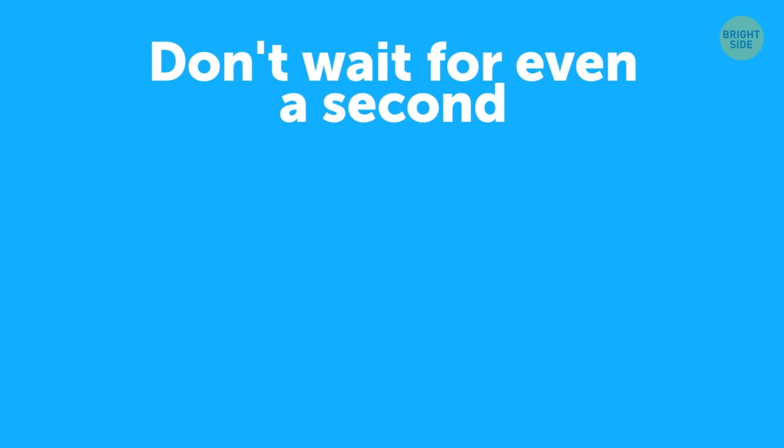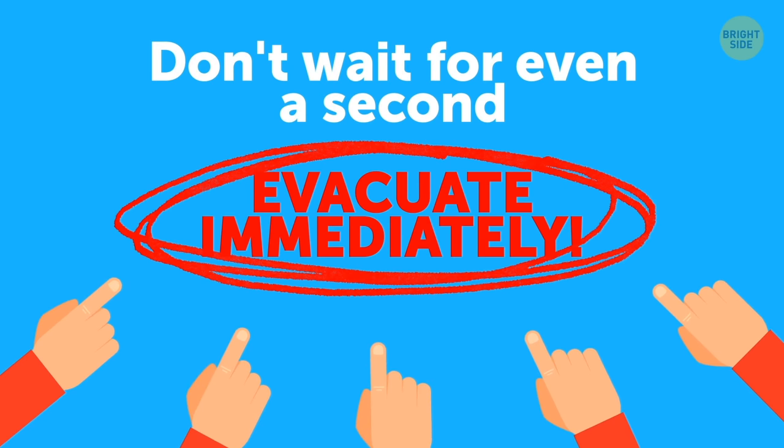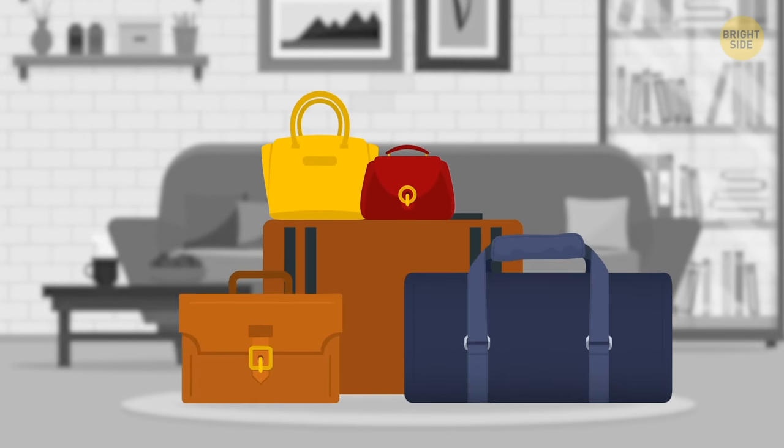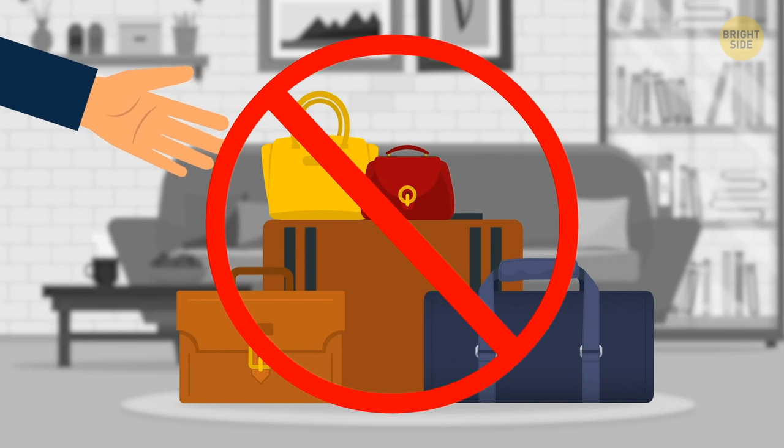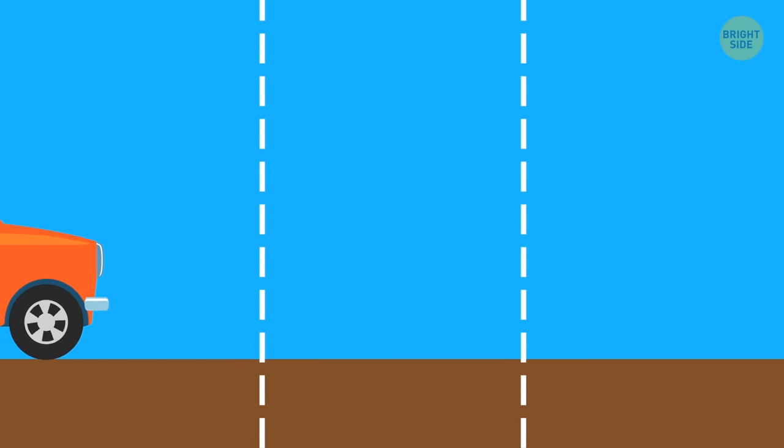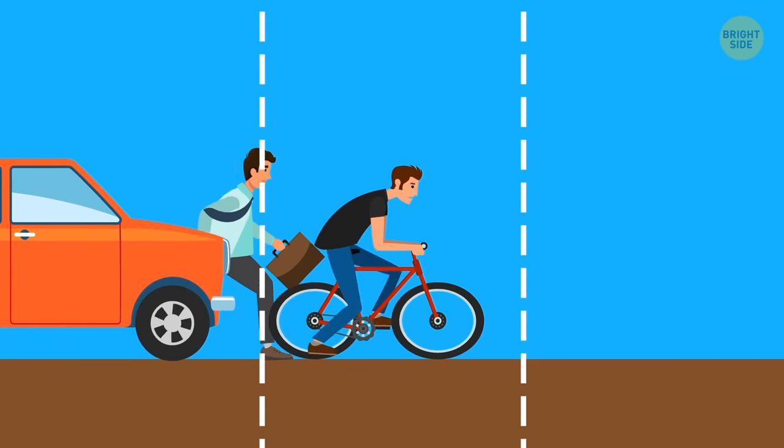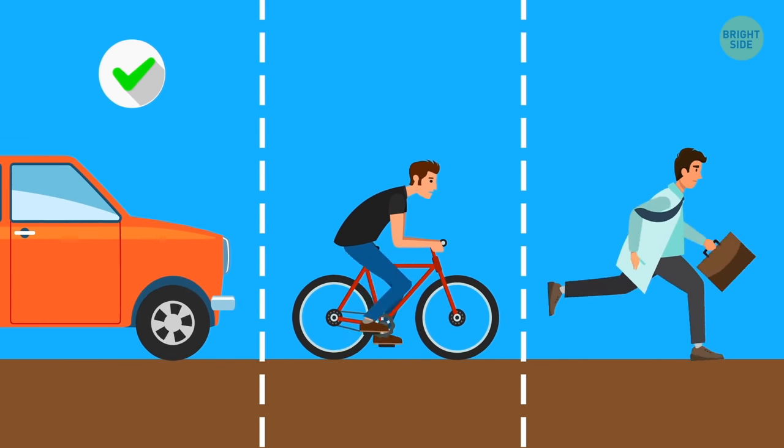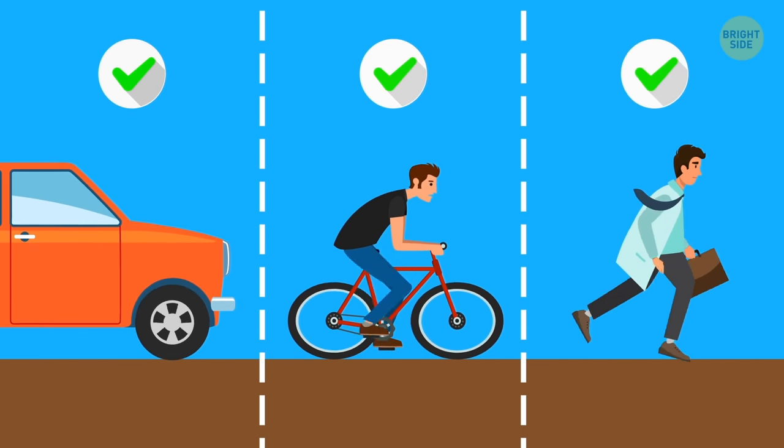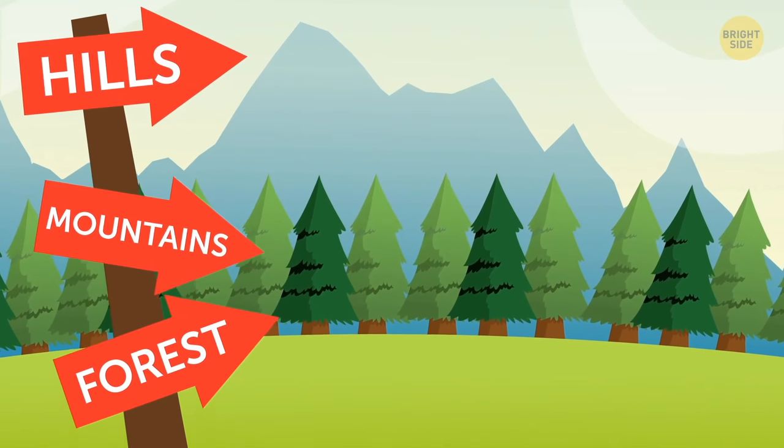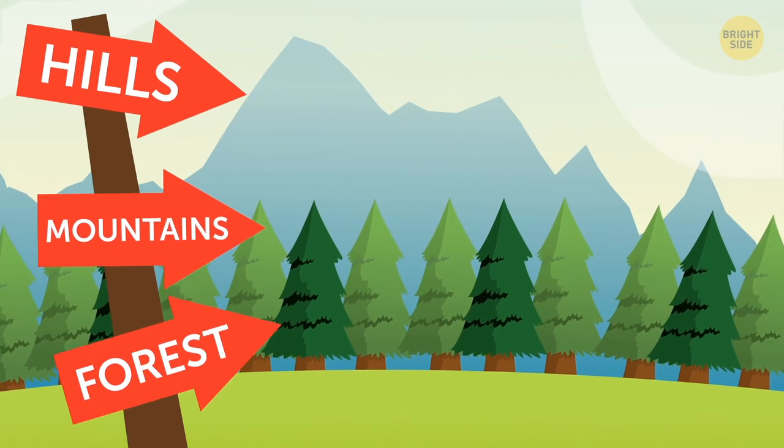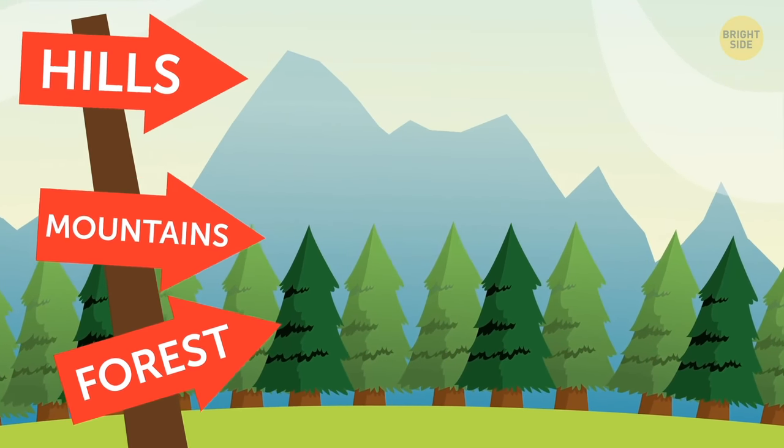As soon as you hear a tsunami alert, don't wait for even a second. Evacuate immediately. Leave behind your personal belongings and documents. Now is not the time to think about your possessions. Gather your loved ones and use any available transport to get away from the coast. Hop in your car, get on a bike, or simply run as fast as you can. Move as far away from the shore as you can, heading toward high hills, mountains, or a forest.